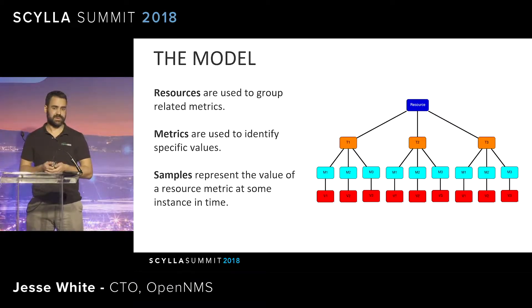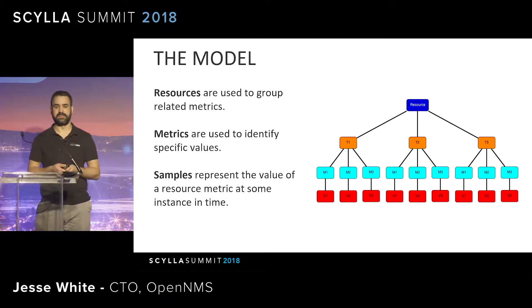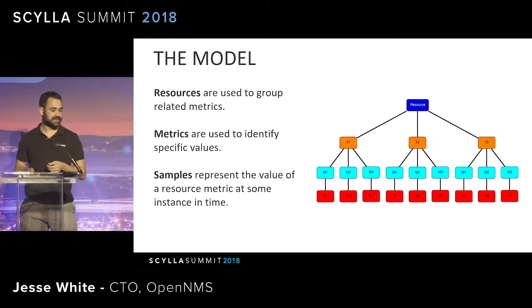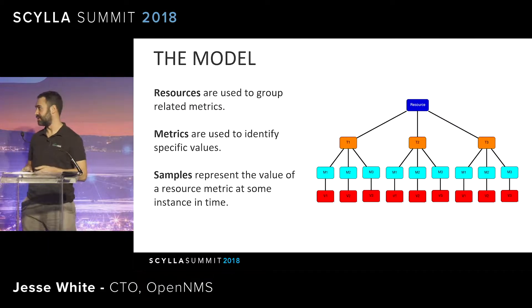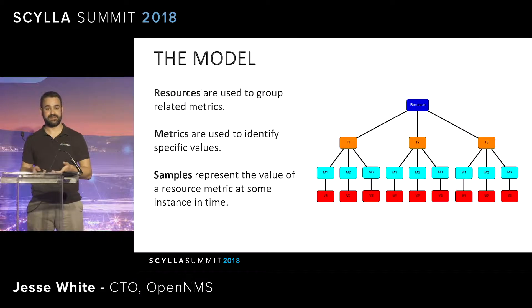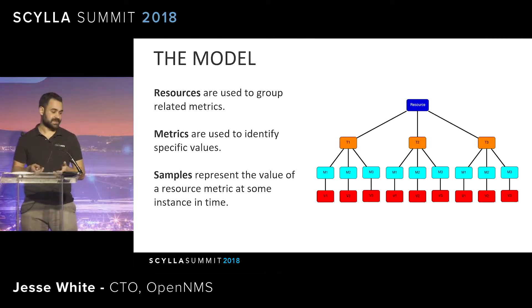A bit about how Newts works under the hood — a few different concepts. At the top level there are resources, which are basically a group of related metrics. Going back to the first example, that would be the interface. We have the metrics, which would be the different metrics we want to collect values for — in that case, if_in_octets and if_out_octets would be two different metrics. And finally the actual values — we call those the samples.